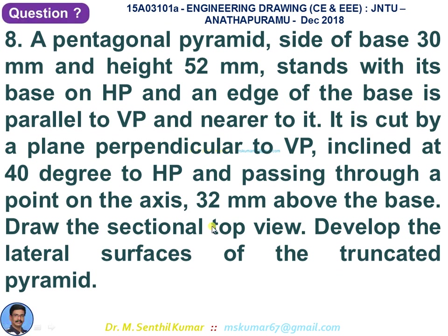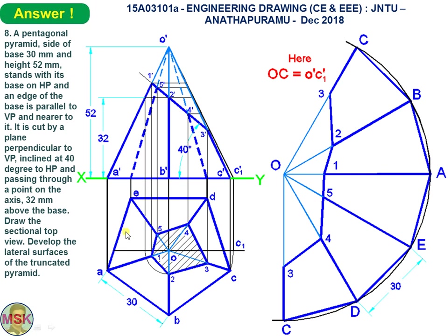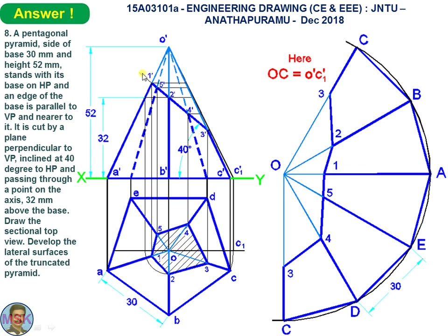There are three components: projection, sectioning, and development. First draw the projection — the pentagon in top view with base edge ED parallel to XY, then complete the corresponding front view. For the sectioning part, the sectional plane appears as a line in front view because it is perpendicular to VP and inclined at 40 degrees to HP, meeting the axis 32 mm above the base.